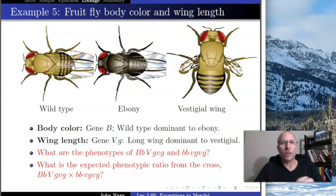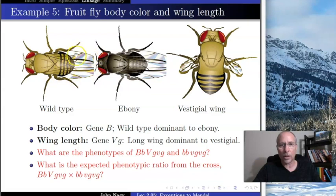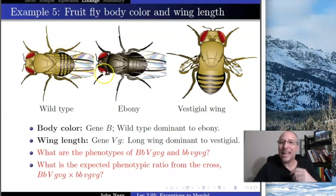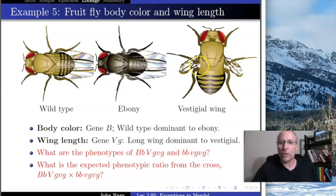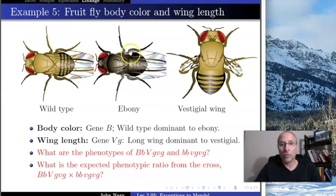There's also another trait: wing length. Flies in nature have long wings that allow them to fly — that's the wild type. In laboratory populations, some have a mutation where the wings are shriveled up, called vestigial, and they're non-functional. They can flap all they want but can't fly, which is another reason you don't see them in the wild. So: wild type body is gray, wild type wing is long; mutant body is black (ebony), mutant wing is vestigial.